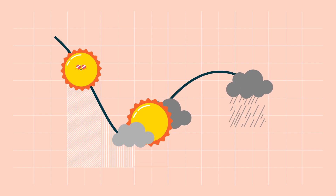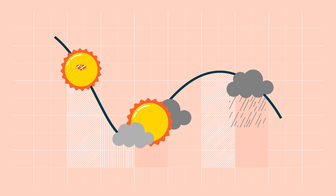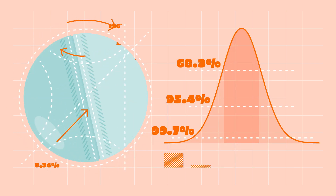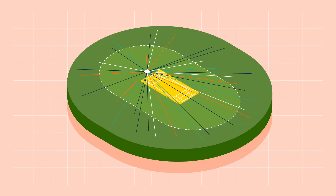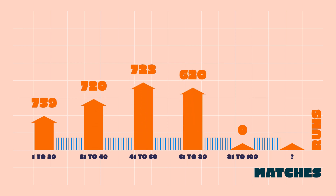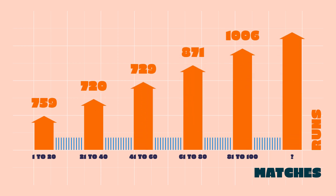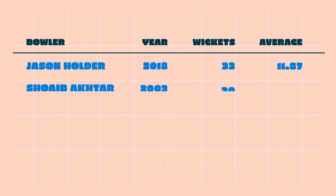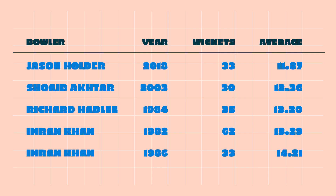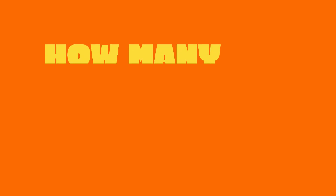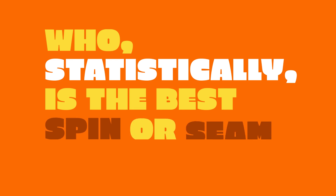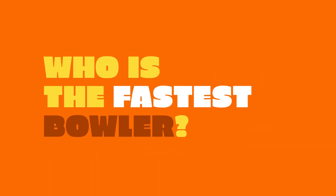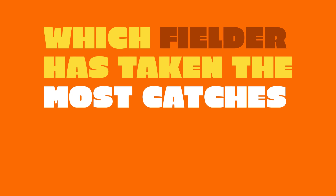Cricket is not just a delight for the amateur meteorologist or the lexicologist — it is also a statistician's dream. The game's nerds pore over how many runs batters have made, what they average over the series or the entire season, or even their whole careers. They also want to know which bowlers have taken 10 wickets in a match and how many times, how many runs were conceded, who statistically is the best spin or seam bowler, who is the fastest bowler, and which fielder has taken the most catches.